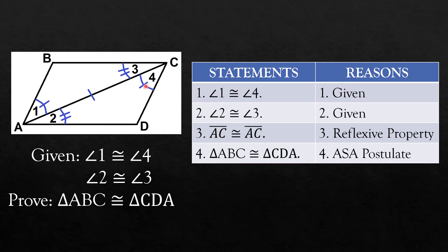Observe if there are consequences of that given. If none, then you proceed on writing the next given. Angle 2 is congruent to angle 3, for the reason that it was given. Next, line segment AC is congruent to line segment AC, or congruent to itself, by reflexive property.